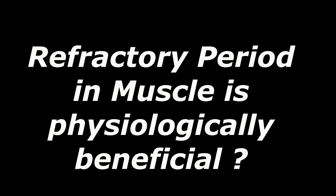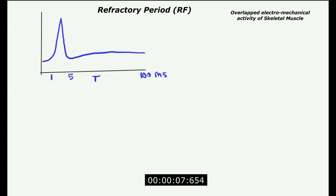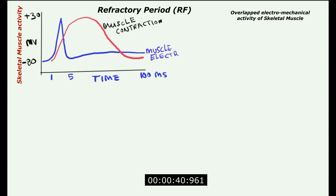The refractory period during muscle contraction is purely beneficial to us because of the closure of the sodium channels during depolarization. Depolarization and repolarization are shown in this illustration with the time scale on the x-axis. The muscle contraction is superimposed on the single muscle fiber preparation. This electrical response is shown on the y-axis of the skeletal muscle, from a resting potential of minus 80 to plus 30 millivolts during the resting and depolarization phases.